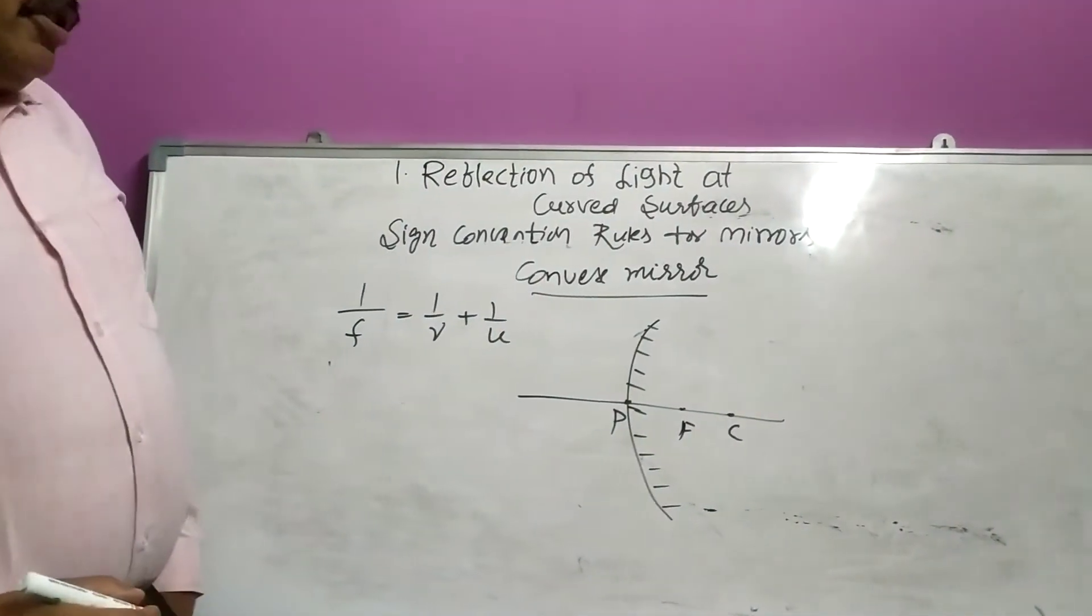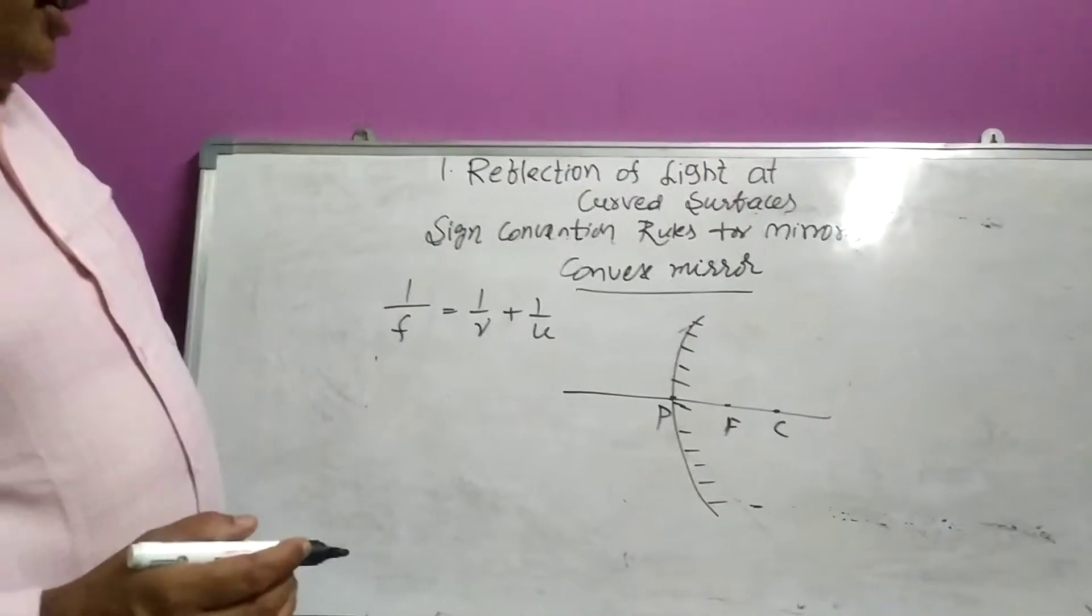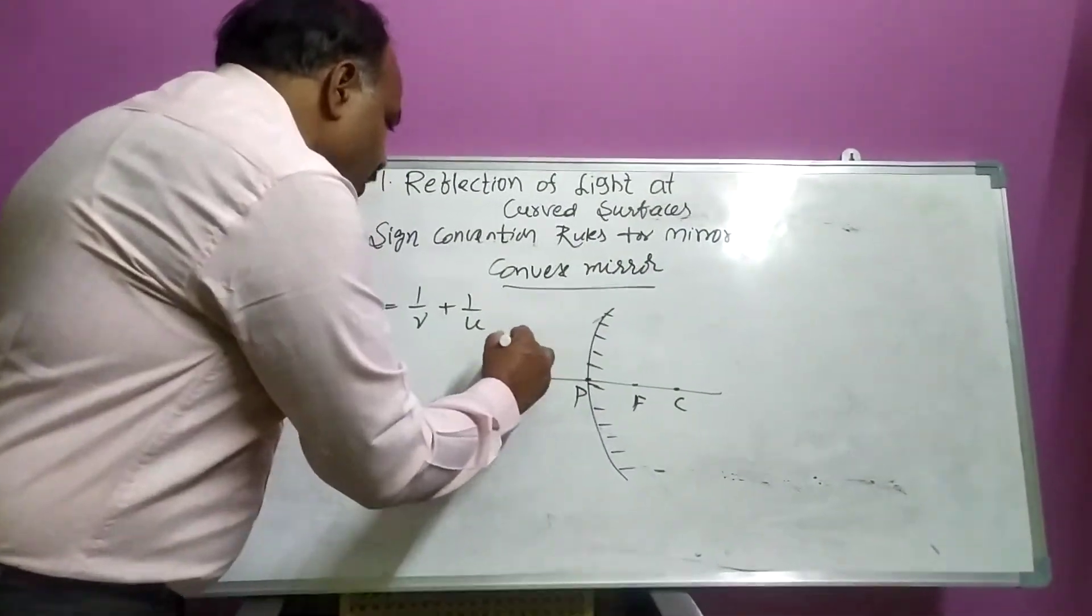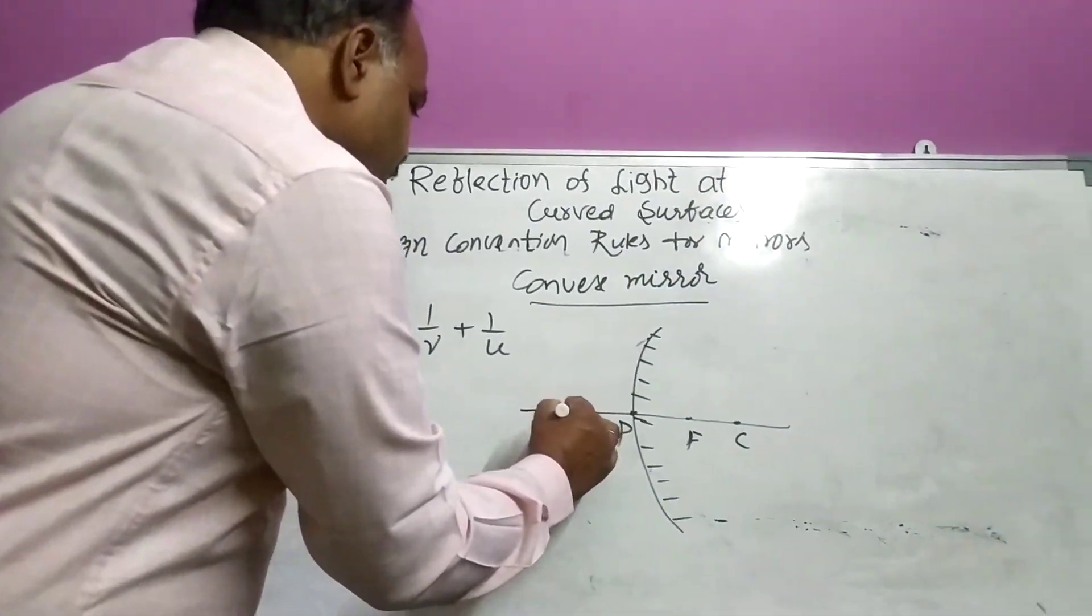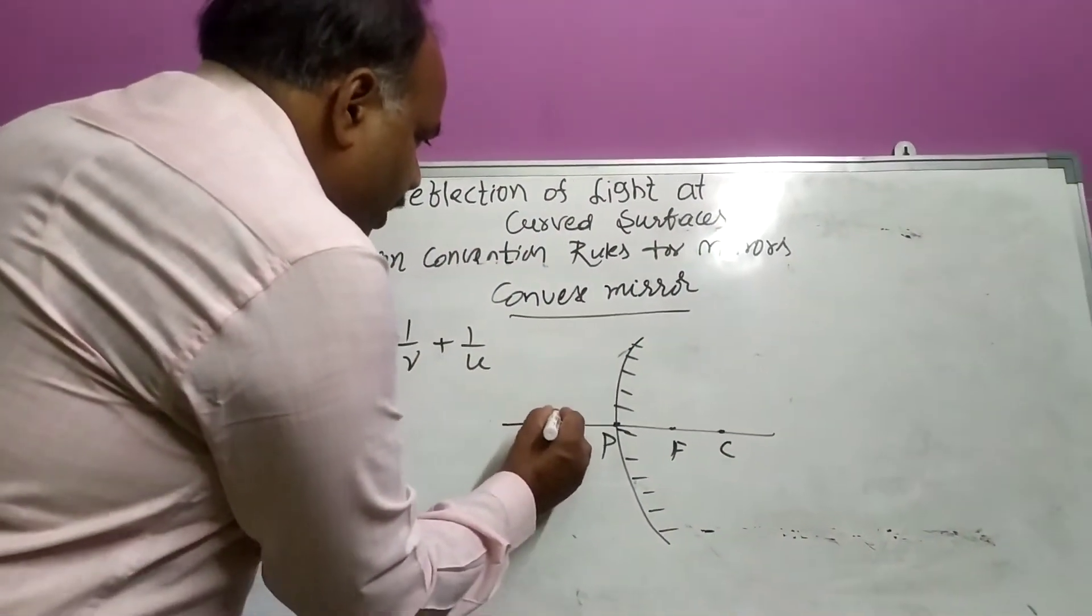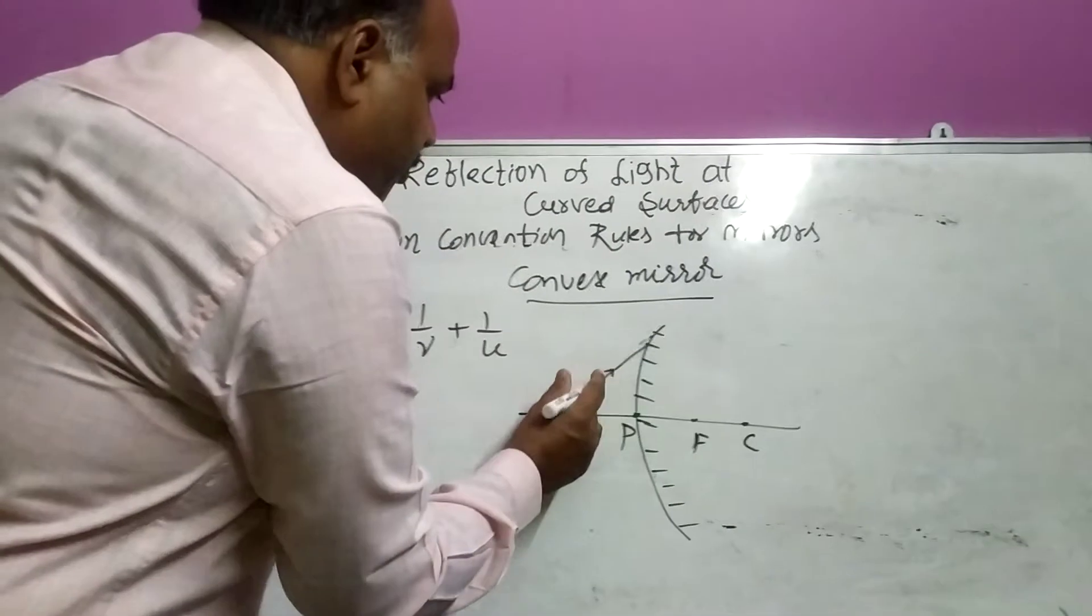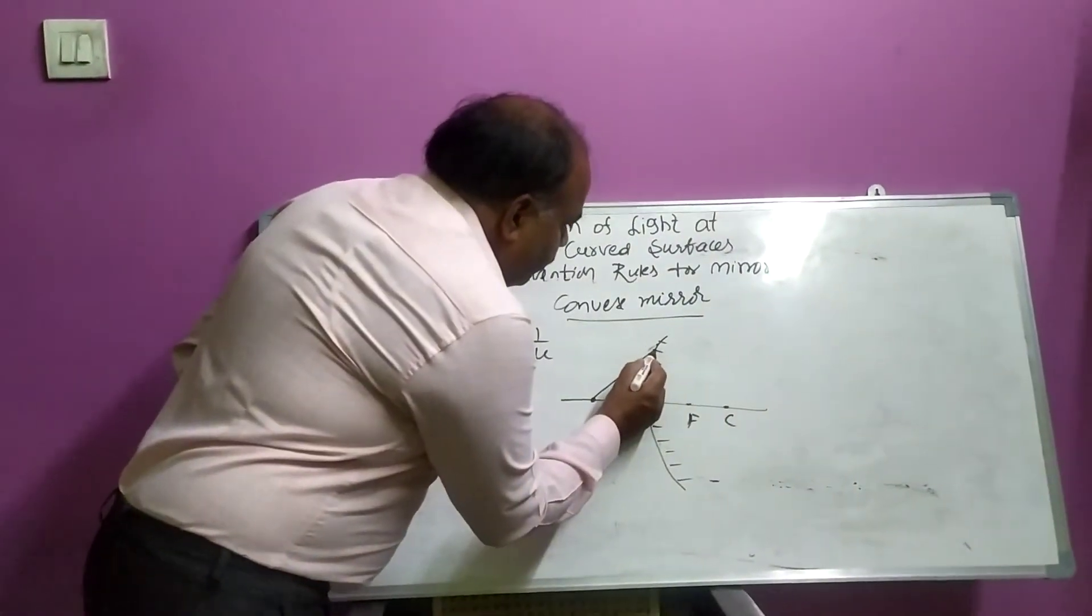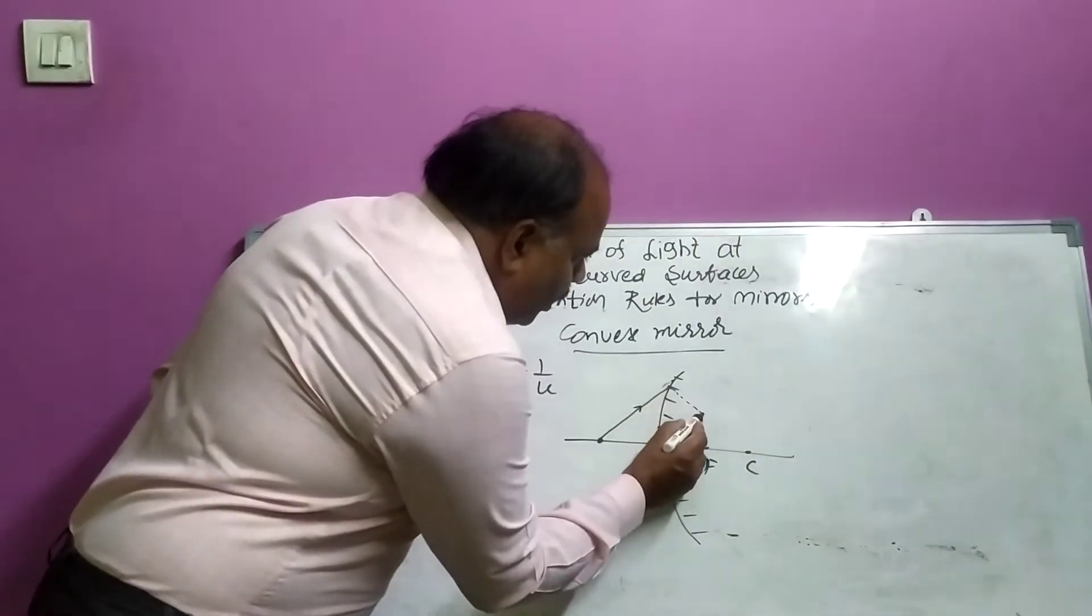In this particular situation, now I am taking an object in front of the convex mirror. Suppose this is an object. This, I am taking one ray, incident ray. It passes through like this. And here, you draw one perpendicular line to C.